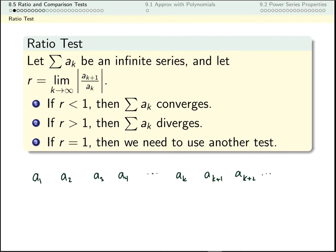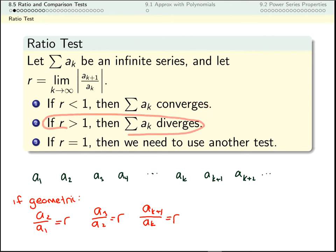Now remember from a geometric series, if this were geometric, there would be a common ratio. So if this were geometric, then it wouldn't matter which pair I took. I would always get the same ratio. Furthermore, we saw with the geometric sequence that if that ratio is less than 1 in absolute value, my series converges. And if that ratio is greater than 1 in absolute value, the series diverges.